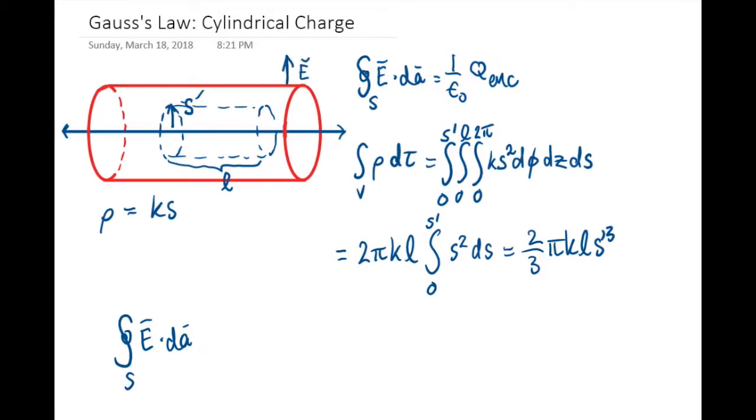When we look at our Gaussian surface, that is parallel to the area vector of the curved surface and perpendicular to the area vector of the ends. So the dot product on the ends will be zero; there will be no electric flux through the ends of the cylinder.